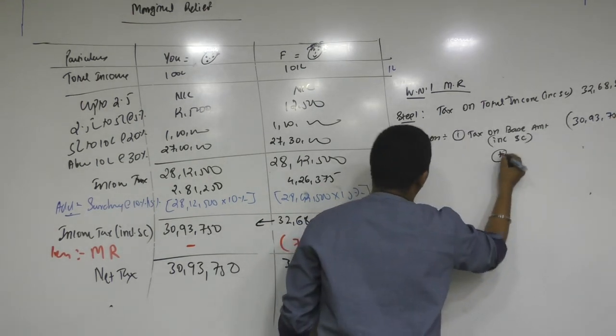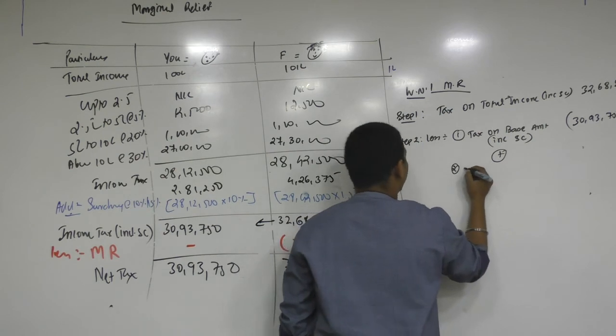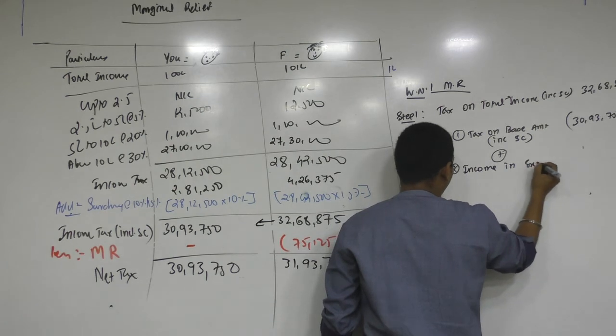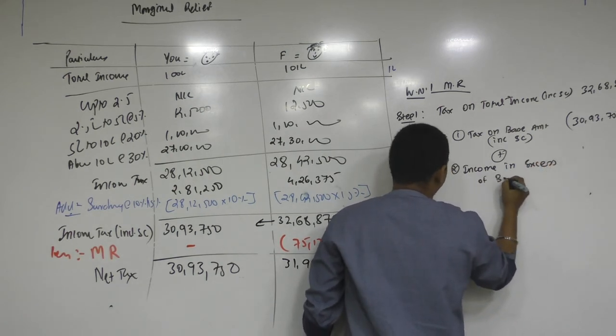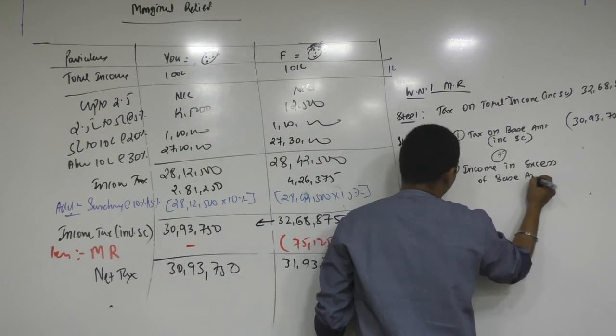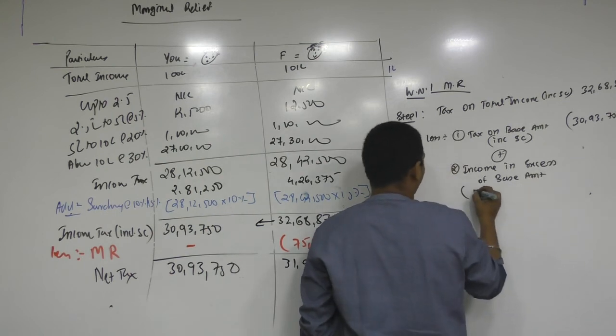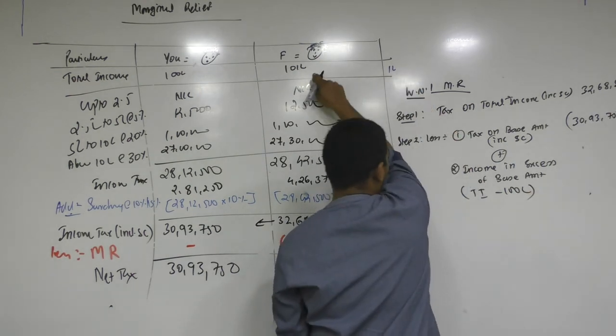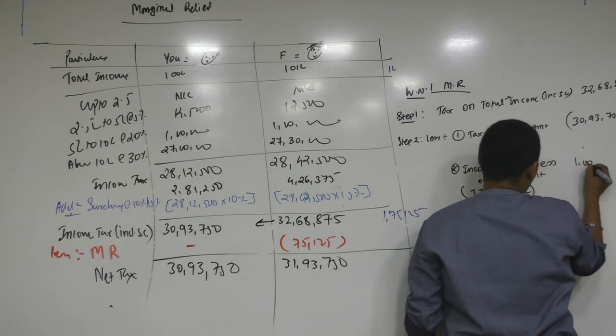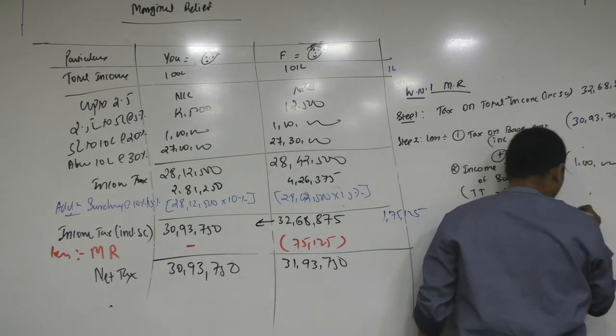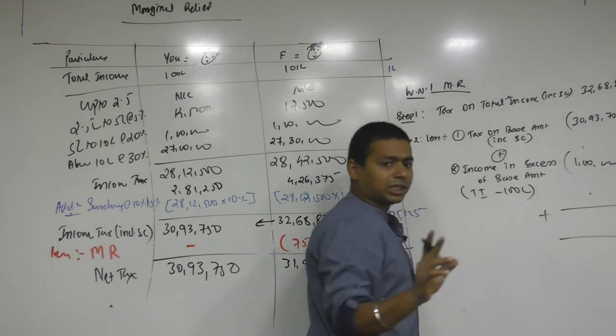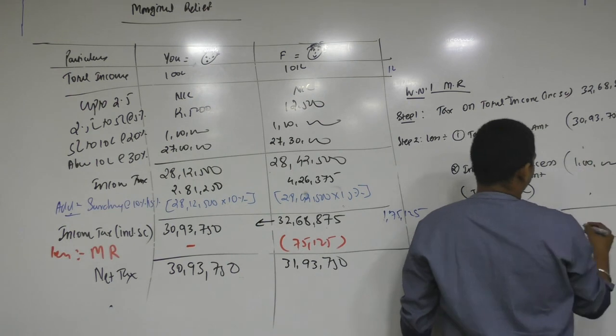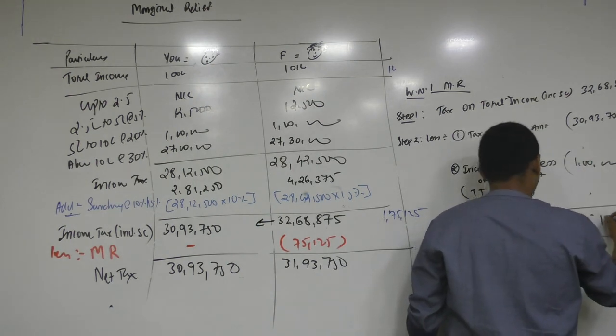Minus. Then what you are ready to drop. Okay. What you are ready to drop. Sir. Income. Income in excess. Hello. Income in excess of base amount. Base amount. And here base amount is. Hello. Total income minus base amount. 100 lakh. What was my total income? 101 lakh. Minus 100 lakh is 1 lakh. So net is positive. If net is positive, then that is marginal relief. So what is my marginal relief? 75,125. Am I clear?